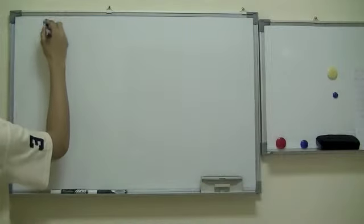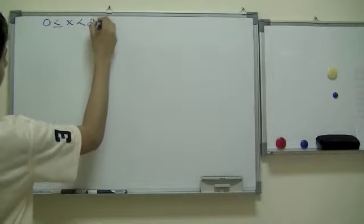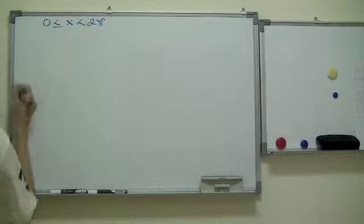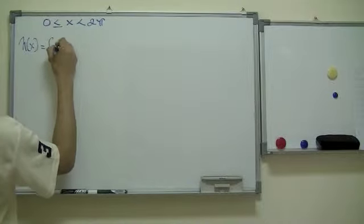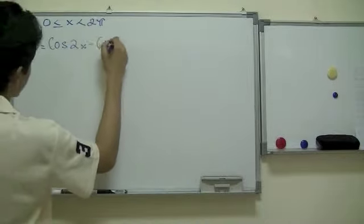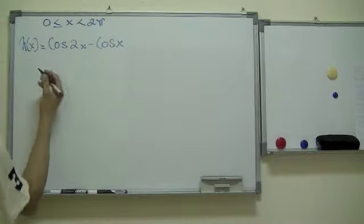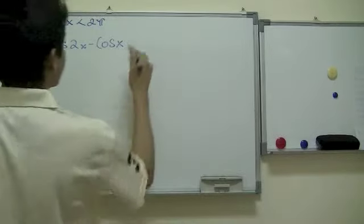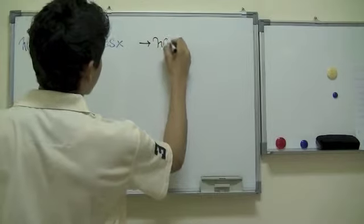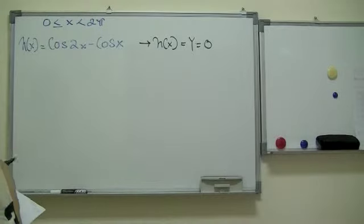So, let's say you have a value of X which lies between this constraint. Now what we need to do is find zeros of a function that was given: H of X is equal to cosine of 2X minus cosine X. To find zeros, we always say we make H of X, which is equal to Y, to be equal to zero. So, let's go ahead and do that.